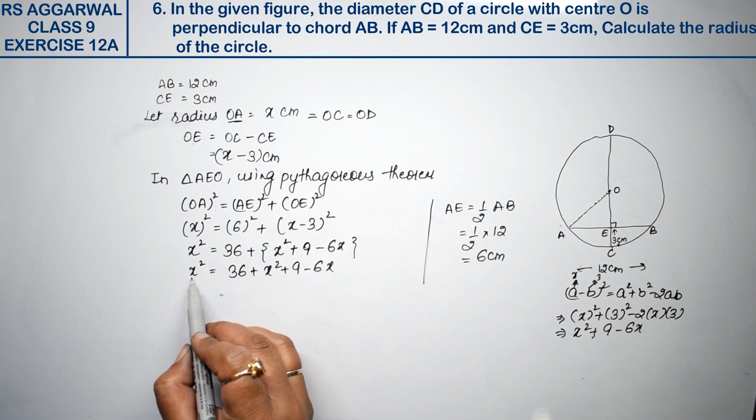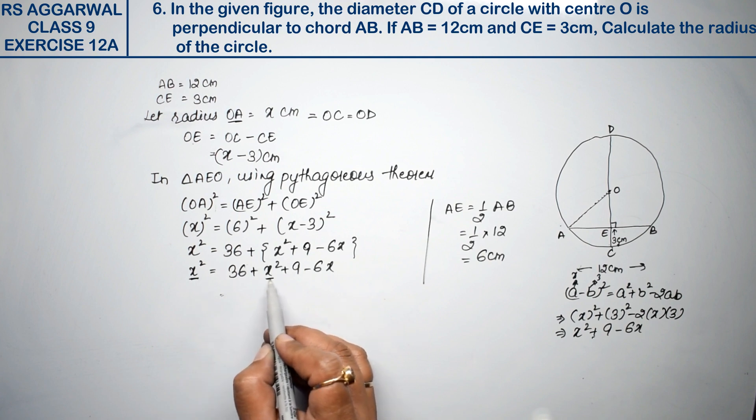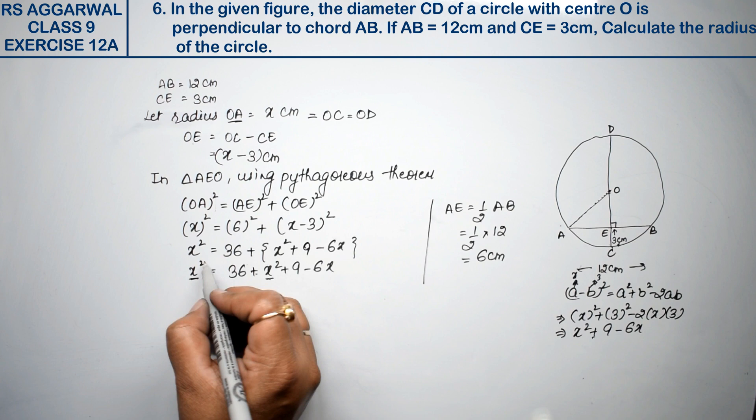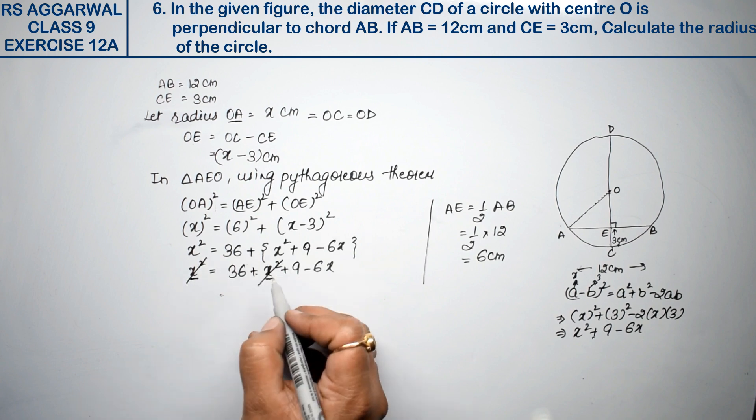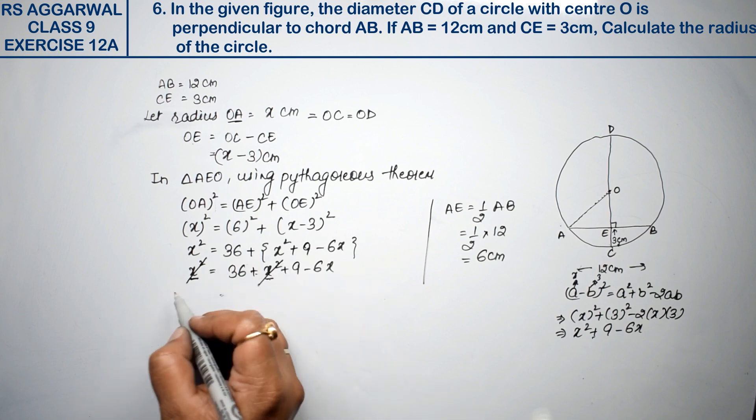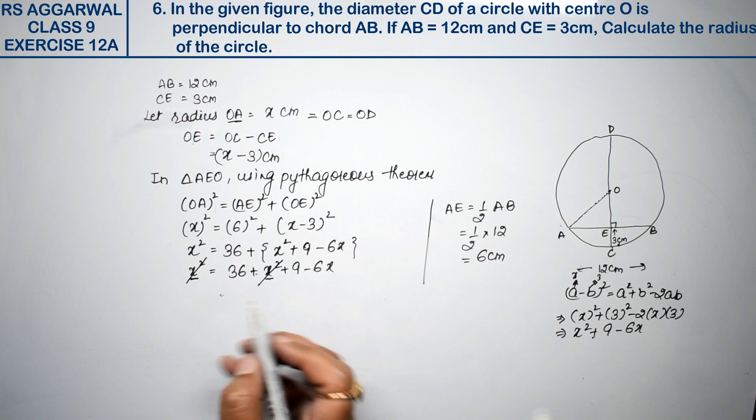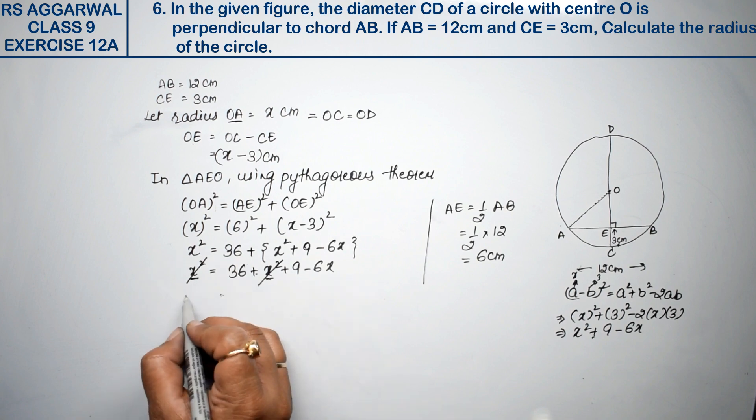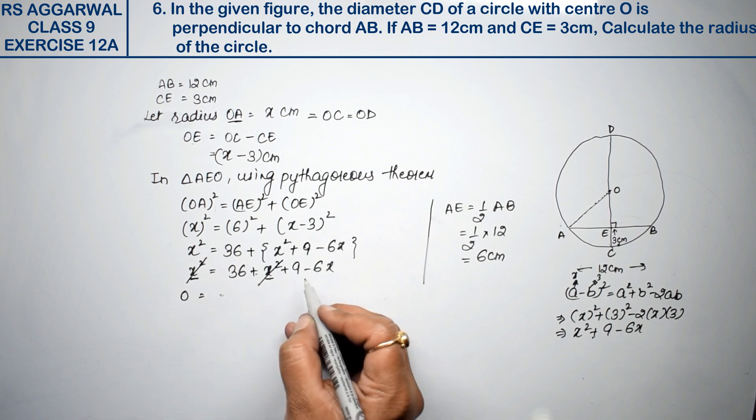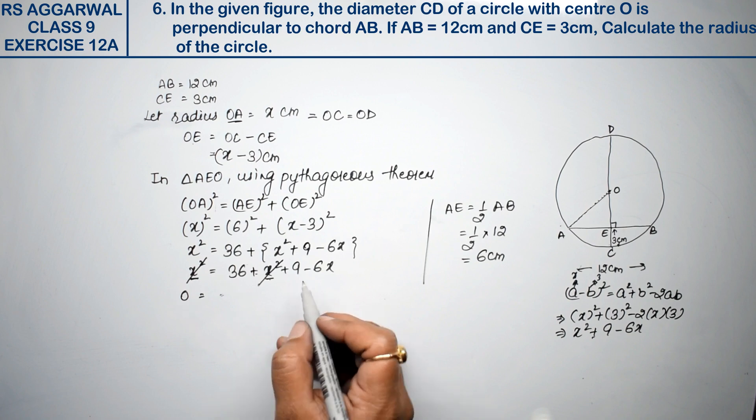Now friends, look, on both sides same variables with same signs, so we can cancel. If we take this to the other side, it will also be minus, so it will cancel, right? Now what do we have? 0 equals to 36 plus 9, how much? 45.